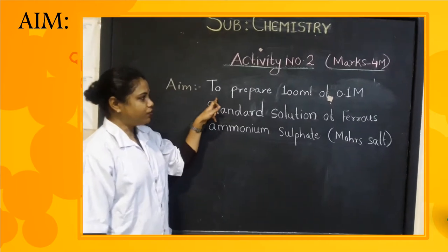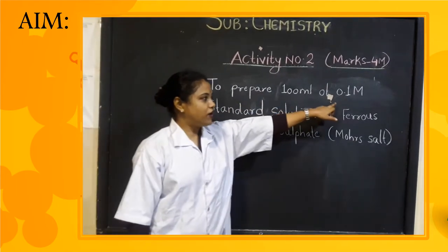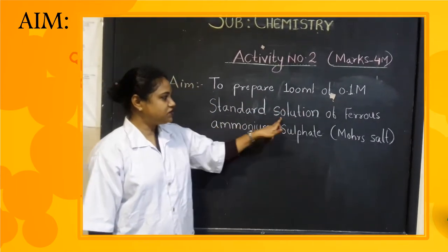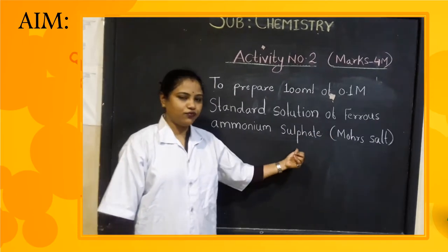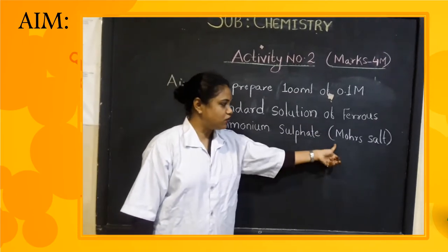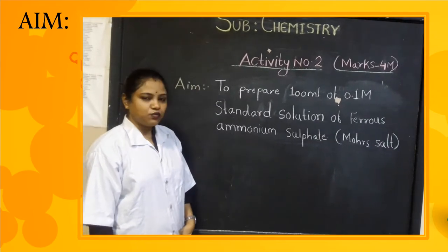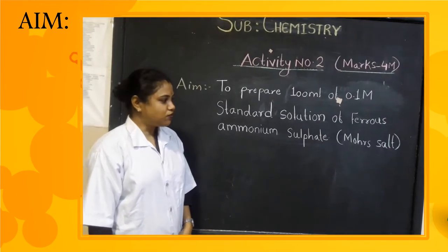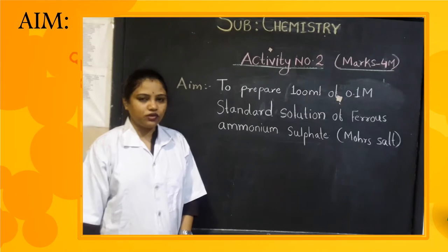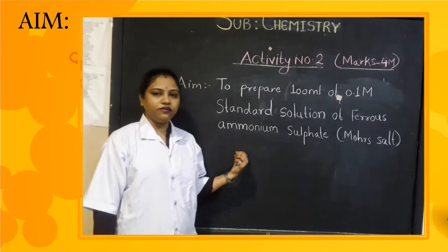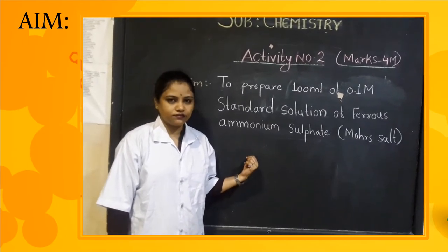The name of the activity is to prepare 100 ml of 0.1 molar standard solution of ferrous ammonium sulphate, also known as Mohr's salt. The other name of ferrous ammonium sulphate is Mohr's salt. This activity is given in the Balbharti handbook, page number 130.